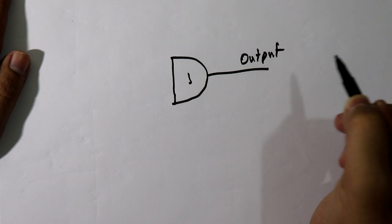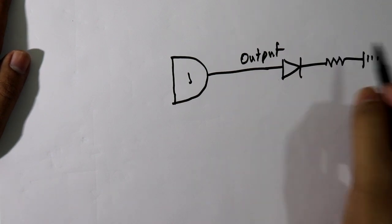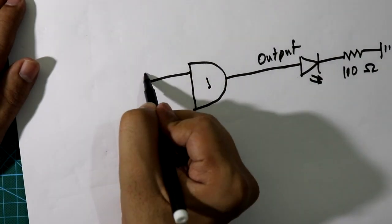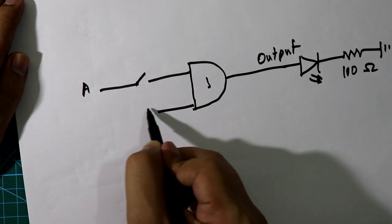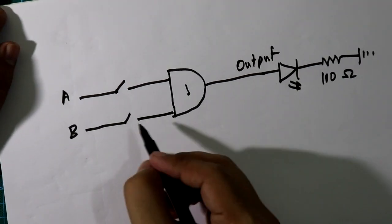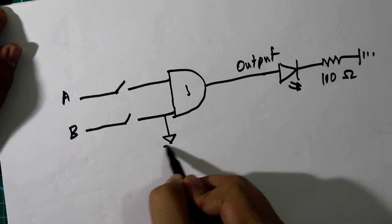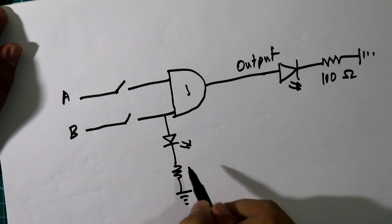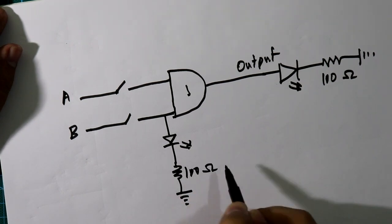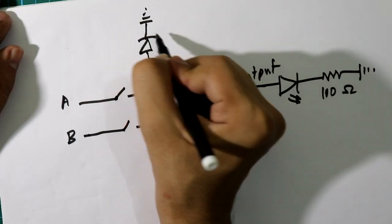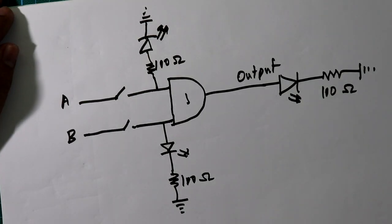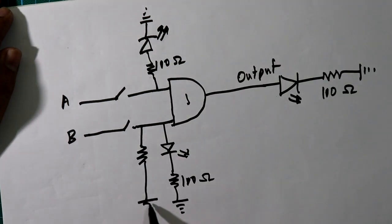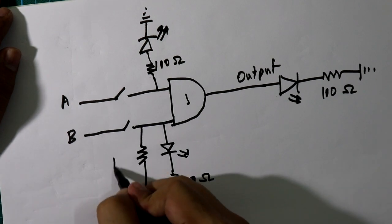In the breadboard we will use only AND gate number 1. Here is the output — we will connect one LED here with a 100 ohm resistor. With each input we will connect one switch and one input LED, so whenever the switch is turned on, the LED will glow. The LED is connected to ground through a 100 ohm resistor.